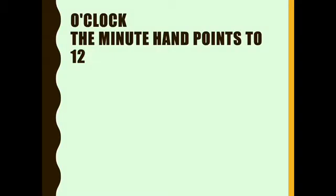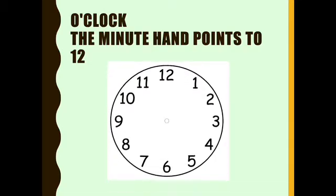Now o'clock — the minute hand points to 12. This is usually the large hand, so the big hand always points at number 12. This means that it is o'clock.